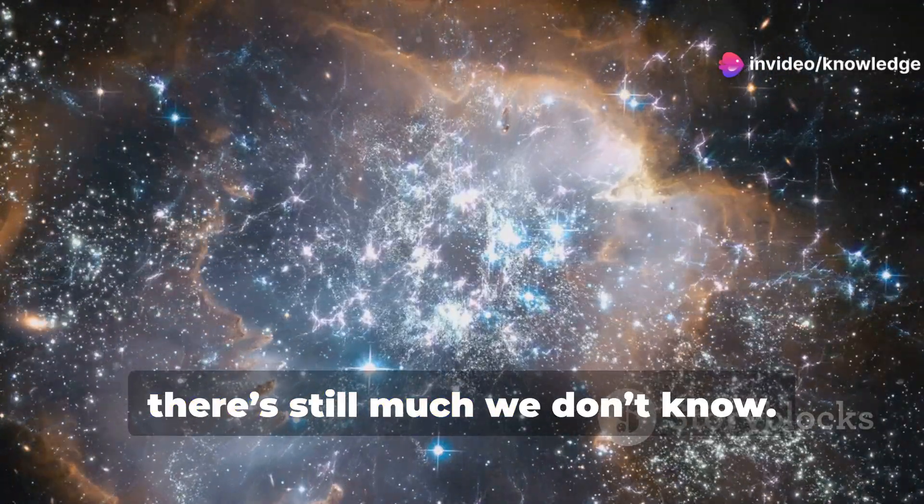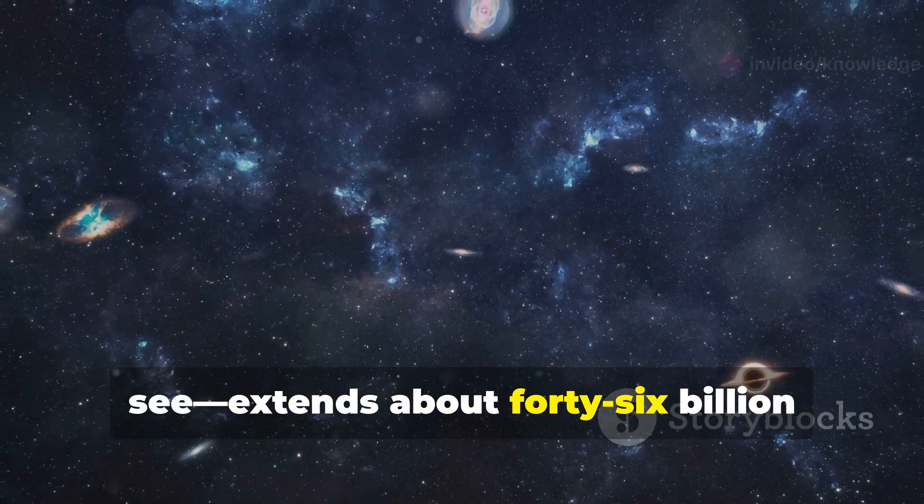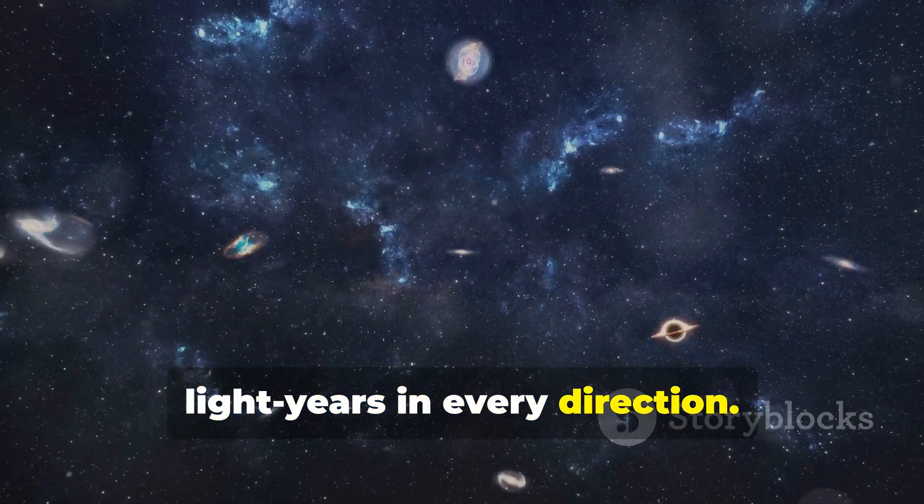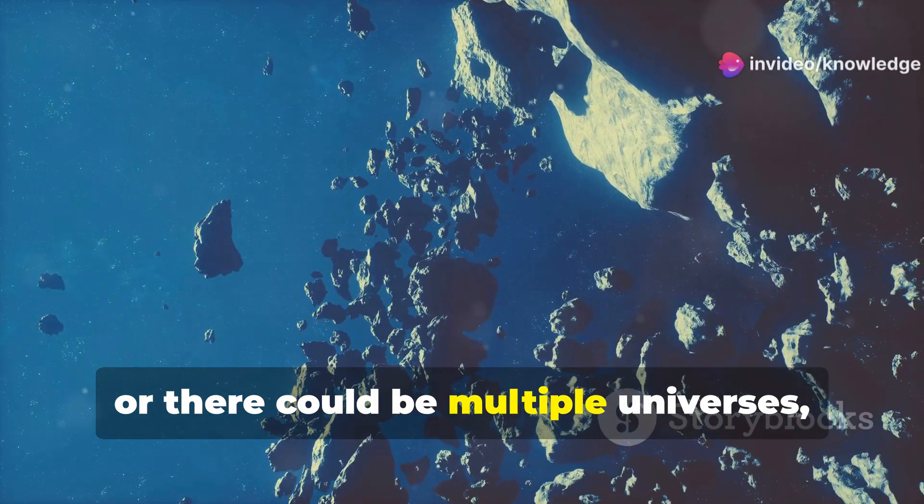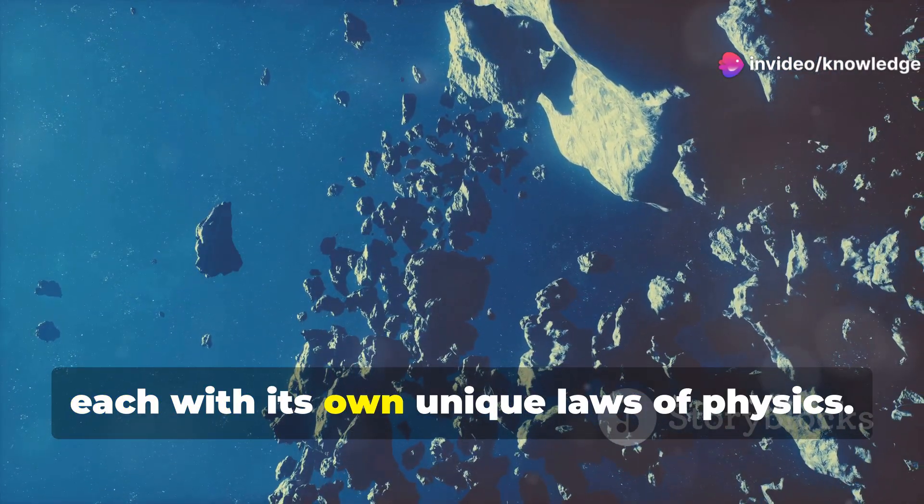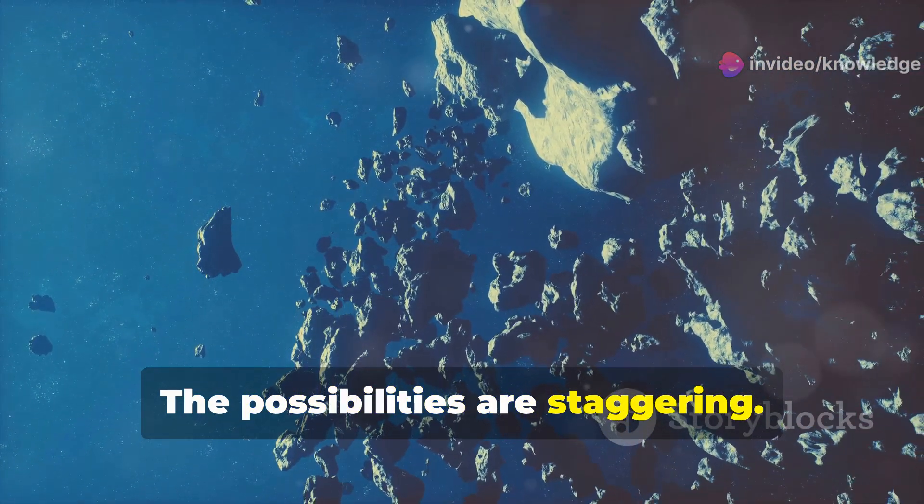The farther we look, the farther back in time we are observing. But even with all of this, there's still much we don't know. The observable universe, the part we can see, extends about 46 billion light years in every direction. Beyond that, who knows what exists? It could be an endless expanse, or there could be multiple universes, each with its own unique laws of physics. The possibilities are staggering.